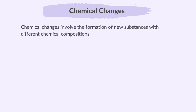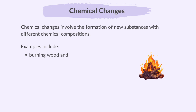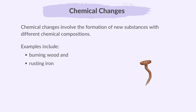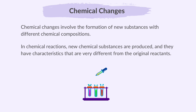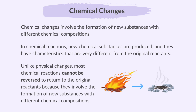Chemical changes, on the other hand, involve the formation of new substances with different chemical compositions. In chemical reactions, new chemical substances are produced and they have characteristics that are very different from the original reactants. Unlike physical changes, most chemical reactions cannot be reversed to return to the original reactants because they involve the formation of new substances with different chemical compositions.